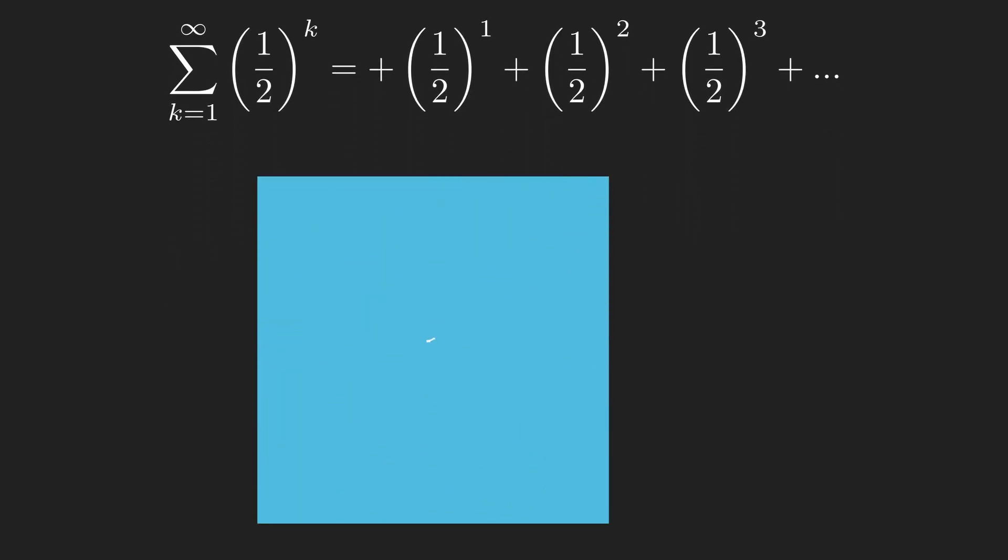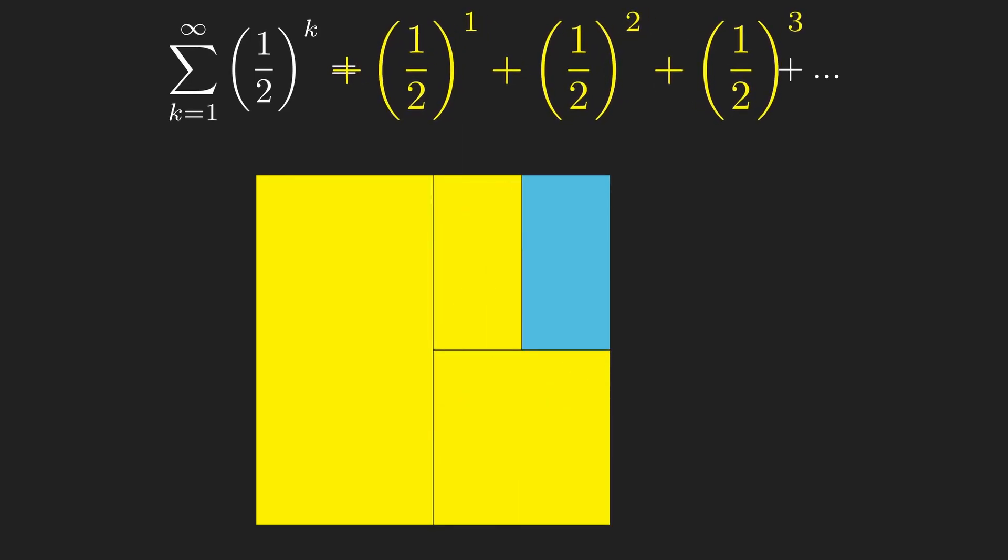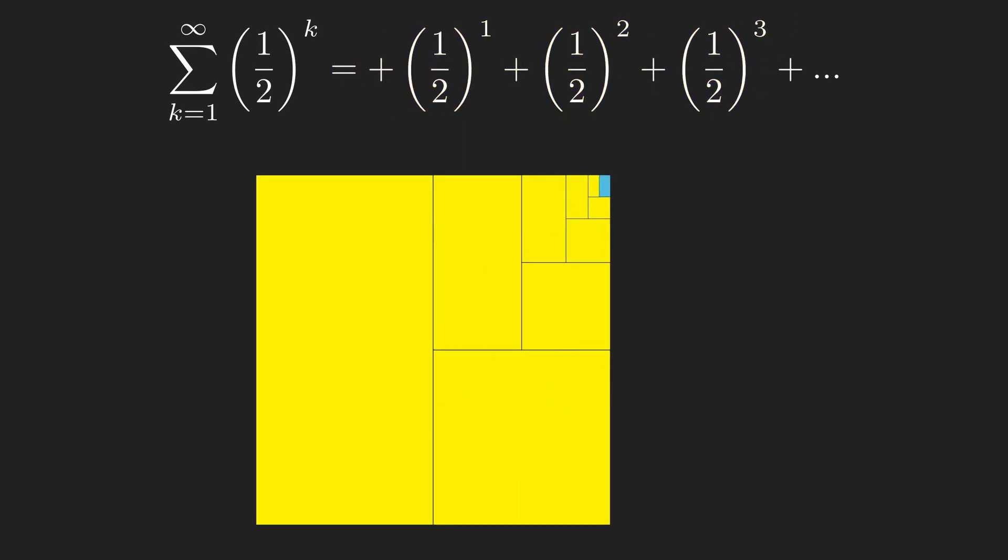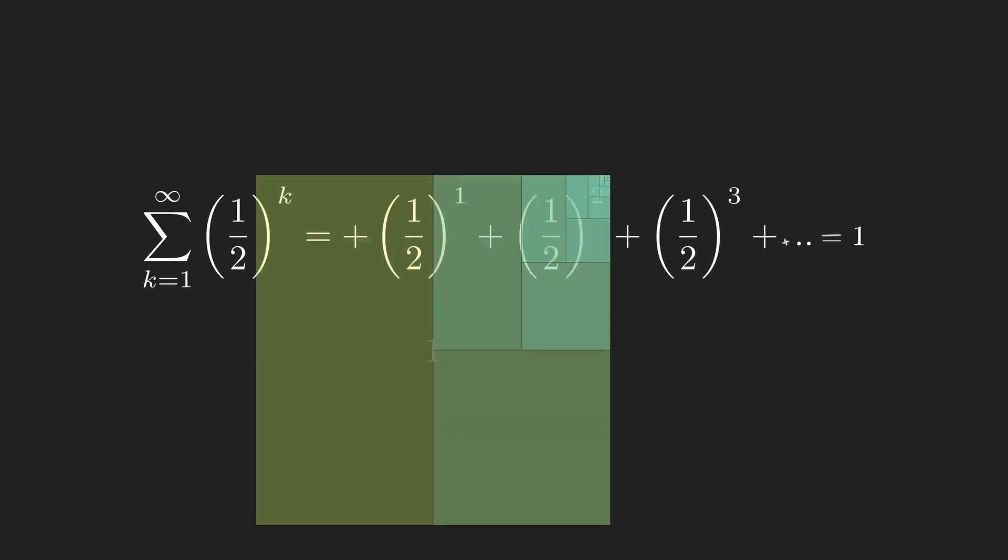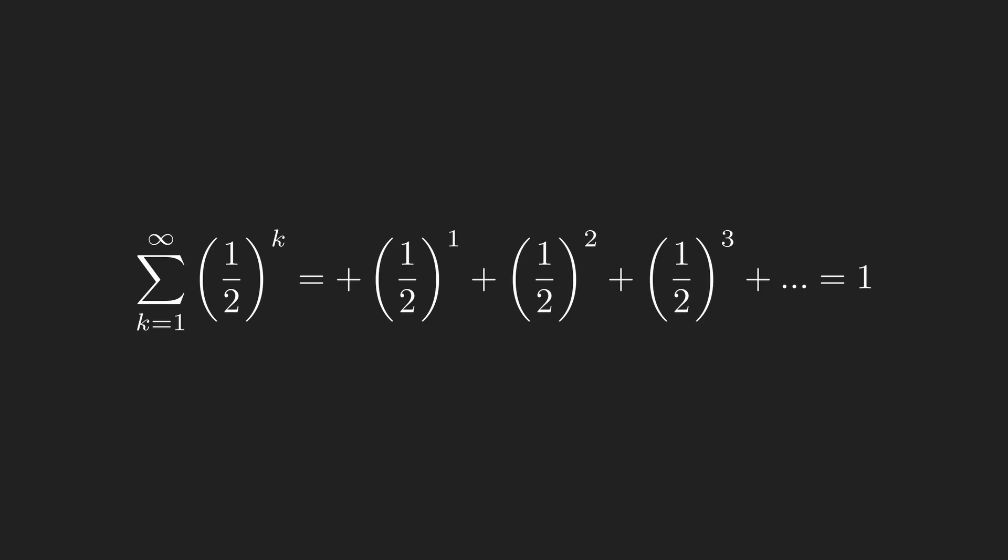On the other hand, what about our original series, 1 half plus 1 fourth plus 1 eighth and so on. In this series, each term is smaller than the previous one, and it's clear that these terms approach an actual result, 1 in this case. Because of this, it's reasonable to say that the result of this infinite series is equal to a finite number, 1, hence we call this a convergent series.